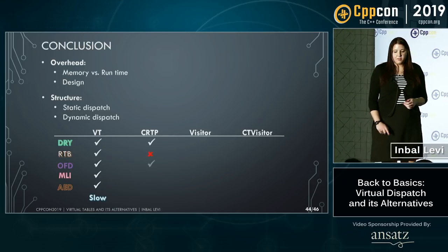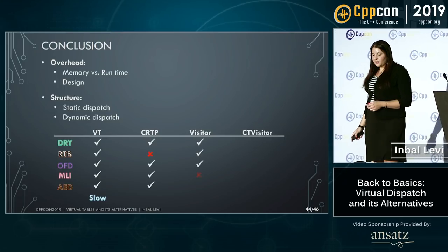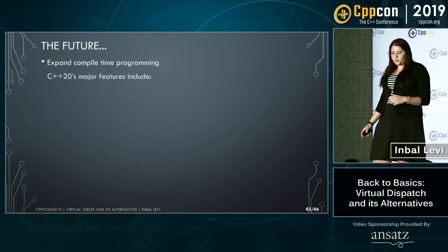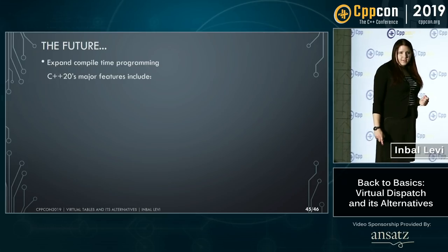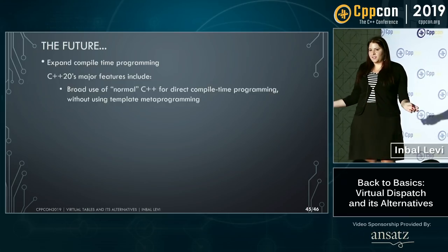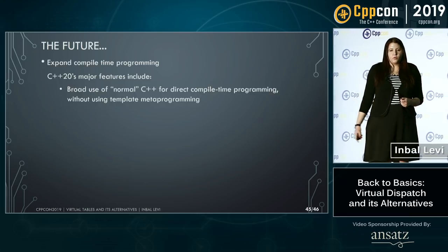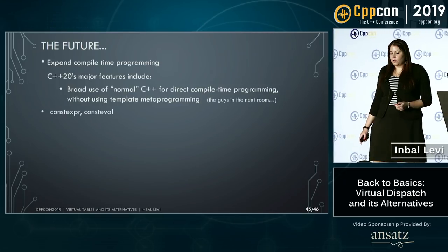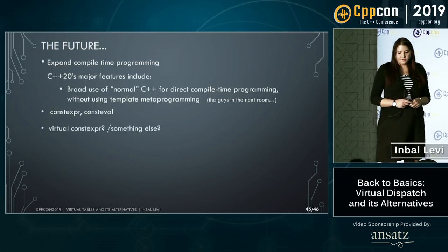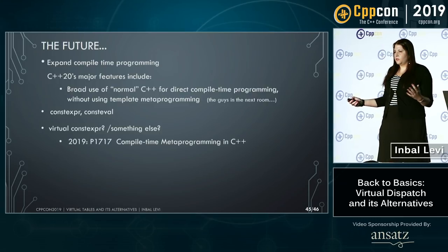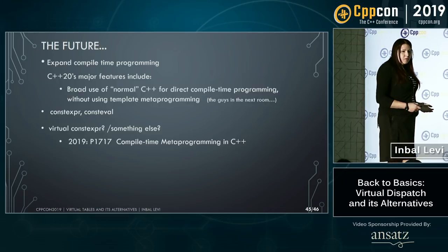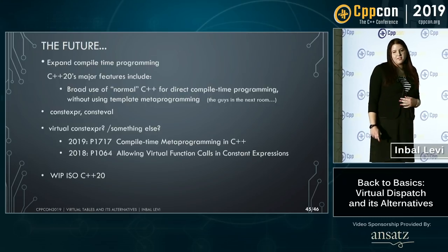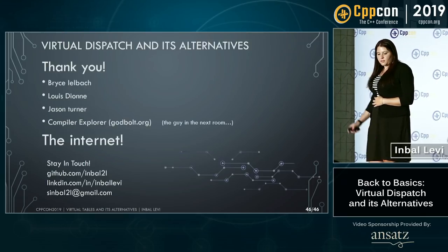In conclusion, the virtual table is really slow compared to the other solutions, at least in this example. C++20 is really trying to make life easier, with broader use of normal C++ for compile-time development and expansion of constexpr and consteval. I would love to have a way to have my polymorphic structure passed to compile time fully with some kind of keyword. There are ideas regarding this but nothing visible in the near future — it's a work in progress. Thank you.